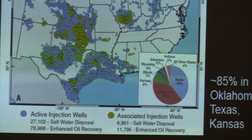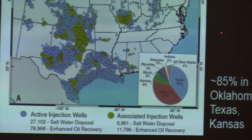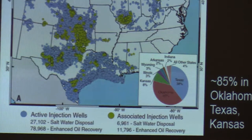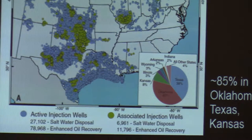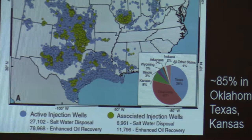This map shows active and spatiotemporally associated injection wells, with blue dots as all the background data. The lower right corner shows how these wells are distributed across different states. About 85 percent of all associated wells are in Oklahoma, Texas, and Kansas — not surprising given the quite active oil and gas production, exploration, and development activities going on there.